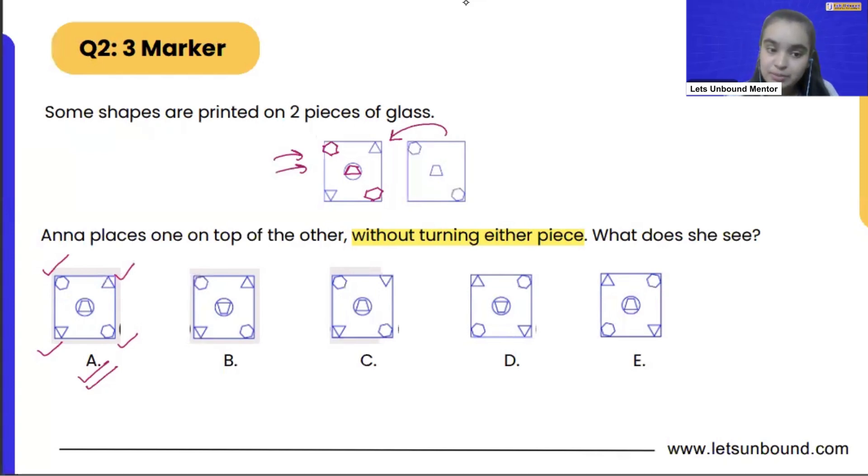If you will see option number B also looks correct, but inside the circle we are having trapezoid which is flipped over. It should be like this instead of what is given. And if you see in option number C, the top right triangle is upside down but it has to be pointing upwards.